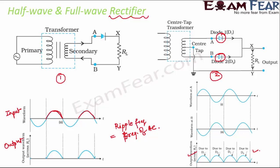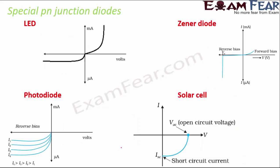In a full-wave rectifier, the ripple frequency equals two times the frequency of the AC input. This topic is quite important — you should also know how to calculate efficiency, average output, RMS output, and form factor for both half-wave and full-wave rectifiers. You can watch the detailed video for more.